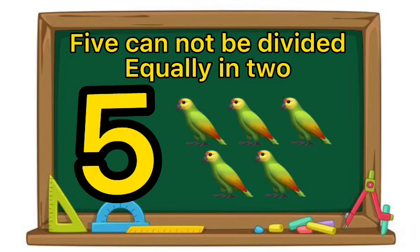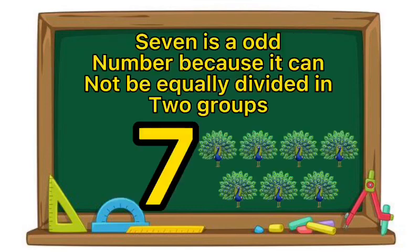5 cannot be divided equally in 2. 7 is an odd number because it cannot be equally divided into groups.